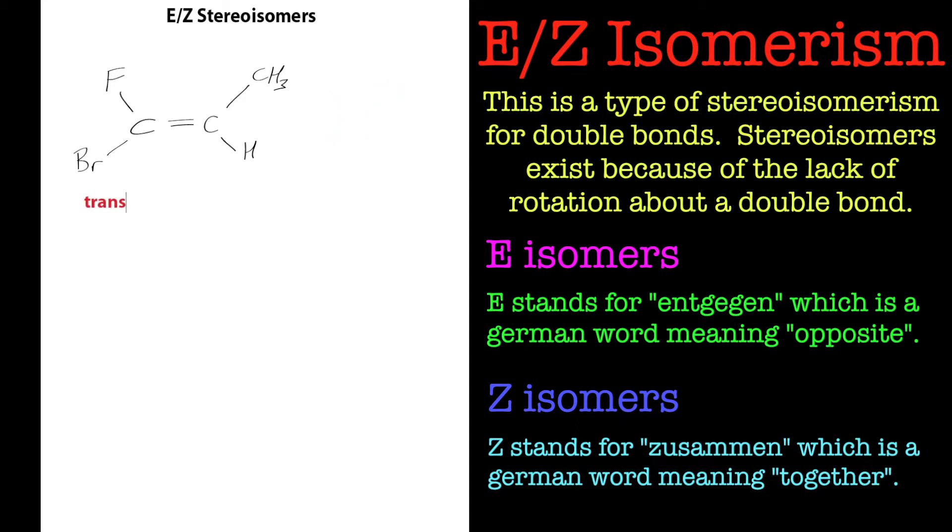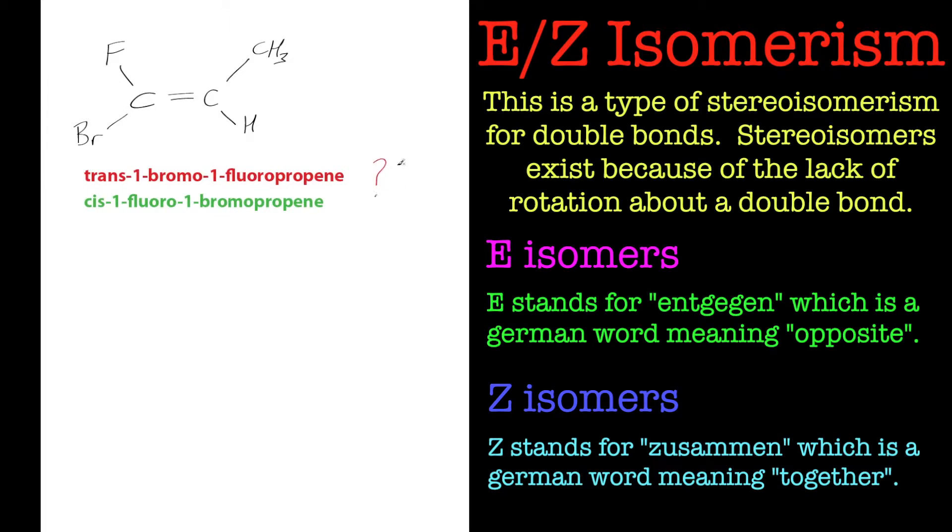Now if we have a structure like this, it can be a bit more complicated. We can name it as trans-1-bromo-1-fluoropropene. Or we can name it cis-1-fluoropropene. Sounds similar but it's obviously different. So which one is it?